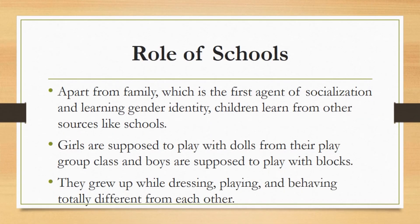Role of schools. Apart from family, which is the first agent of socialization and learning gender identity, children also learn from other sources like schools. Girls are supposed to play with dolls from their playgroup class and boys are supposed to play with blocks. Girls play different games and boys play different games. They grow up while dressing, playing and behaving totally differently from each other.